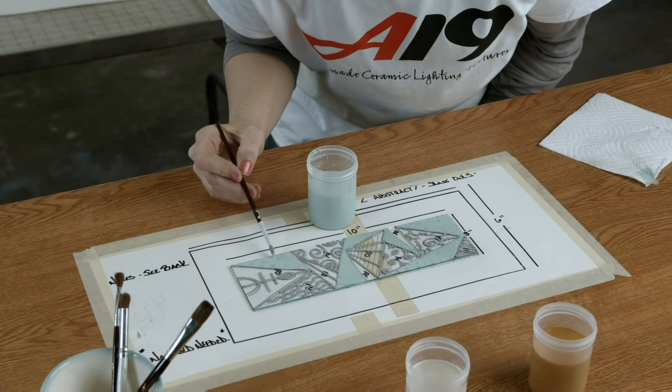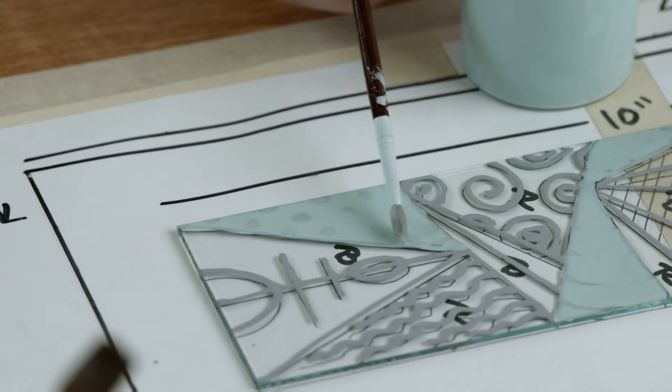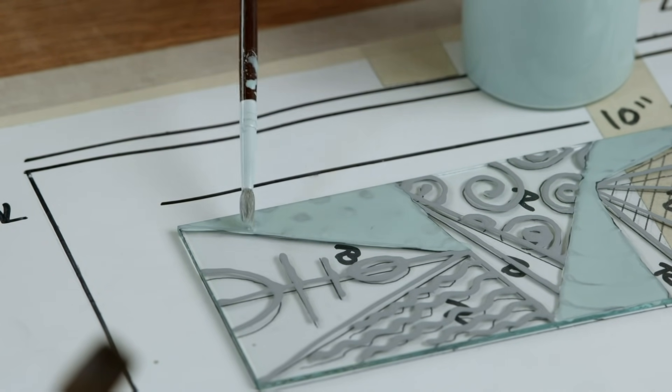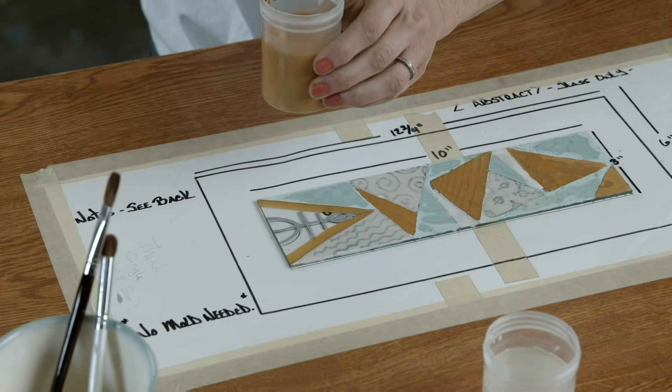Once the lines are dry, designated colors are painted within them. Each area on the sketch has a letter that corresponds to a specific color of enamel.